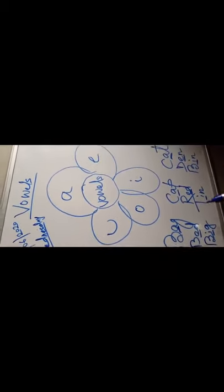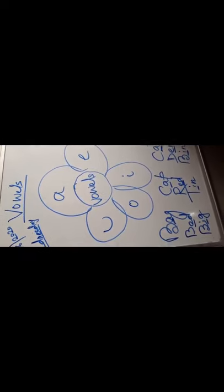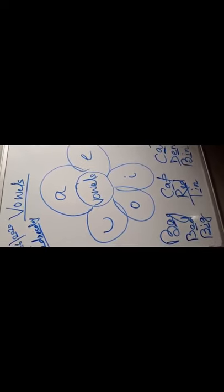Now come to I sound words — big: B, I, G. Then tin, bin. We used I vowel here to make I sound words.